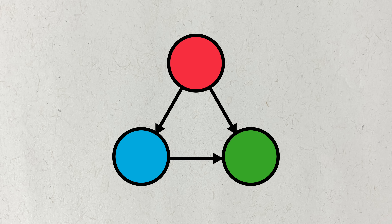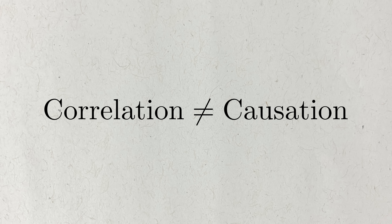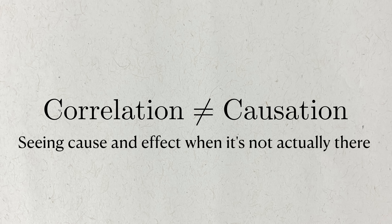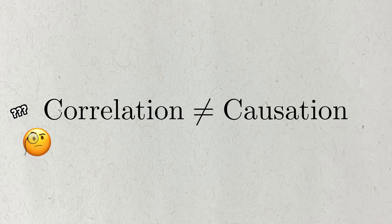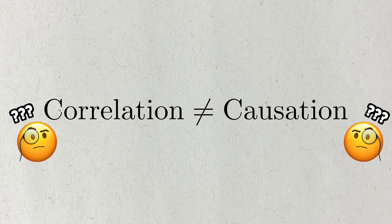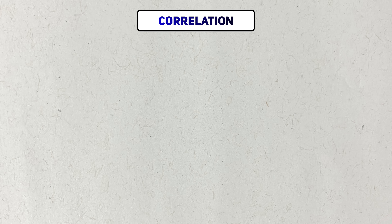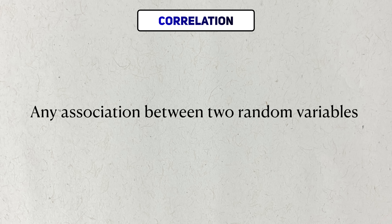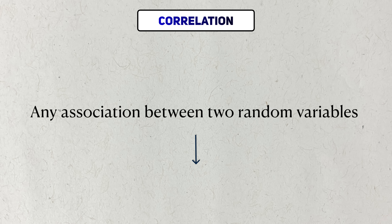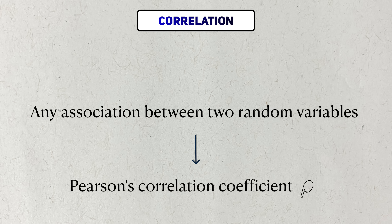In this video, I'm going to tell you about what haunts statisticians at night. In everyday speech, the saying 'correlation does not equal causation' refers to the idea of seeing cause and effect between two events when in fact there isn't any. But what is correlation? And for that matter, what's causation? Broadly speaking, correlations can refer to any association between two random variables. I'll focus on the type of correlation that most people know about — Pearson's correlation coefficient, denoted with the Greek letter rho.